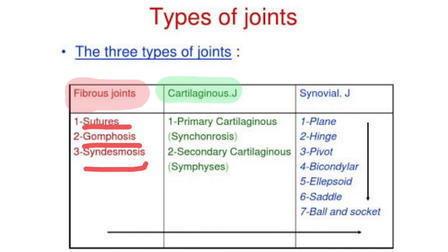The second type of joints in our skeleton is the cartilaginous joint. Cartilaginous joints are of two types: primary cartilaginous joints, which are temporary, or secondary cartilaginous joints, which are permanent. We will explain each one in detail later on.